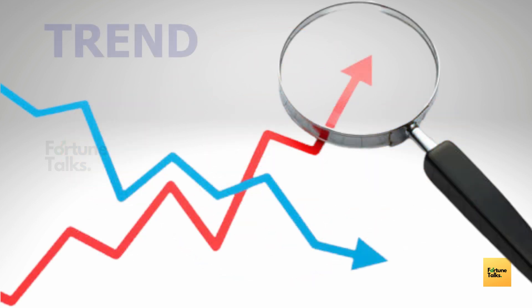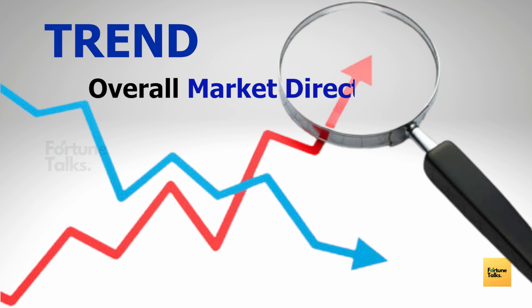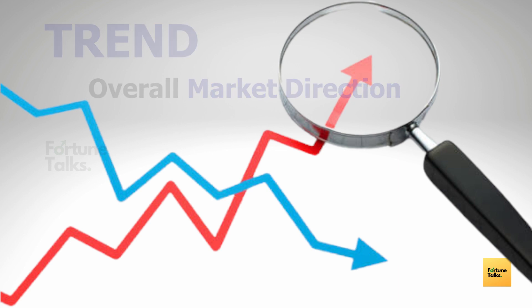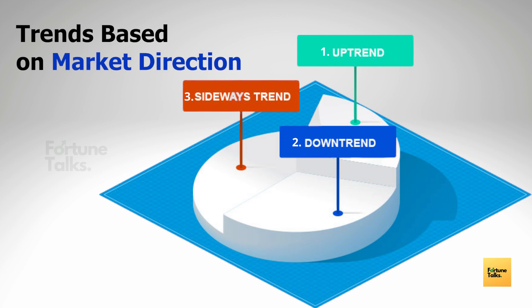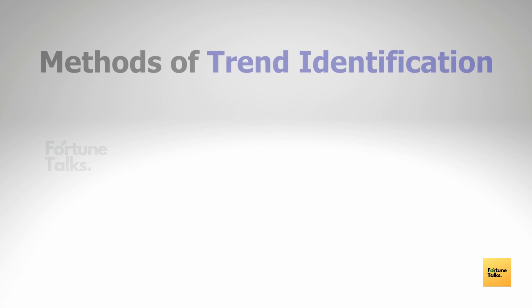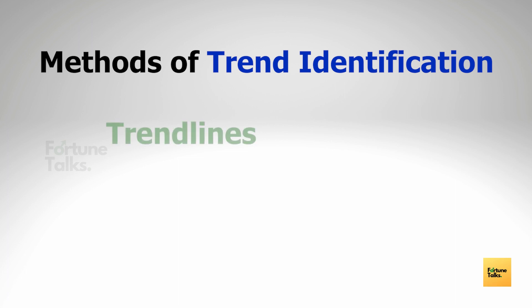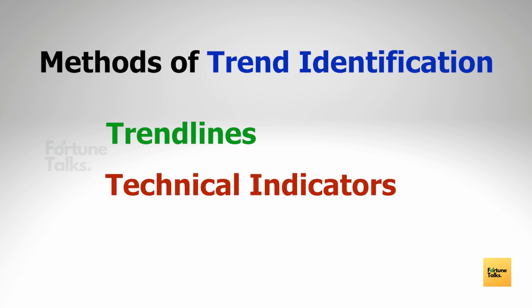In the stock market, a trend is the overall direction of the market during a specified period of time. There are mainly three types of trends: number one, the uptrend; number two, the downtrend; and number three, the sideways trend. The most popular methods to identify the general trend are using trend lines for visualizing price swings, and indicators like moving averages and average directional index. However, we will limit our discussion to trend lines only, as this is a price action course focused on cleaner charts.